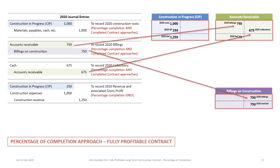The next journal entry shows a debit to Accounts Receivable — a balance sheet account — with a beginning balance of zero. Our first entry is a debit of $750,000, and there is subsequently a credit of $675,000 for collections. The other side of the billing entry is Billings on Construction for $750,000 — also a balance sheet account. Billings on Construction is actually a contra account to Construction in Progress.